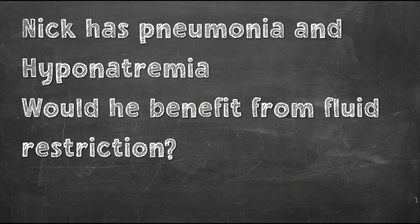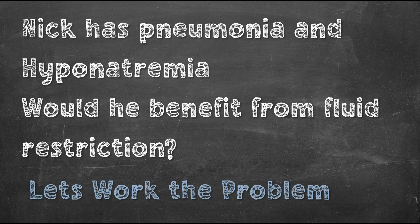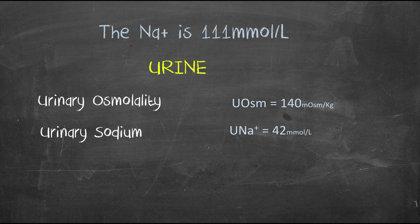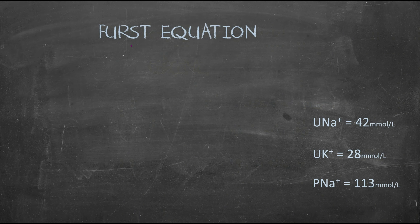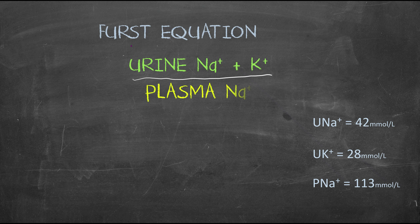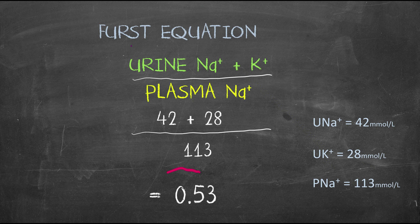Would Nick benefit from fluid restriction? Let's work the problem. His sodium is 111, urinary osmolality 140, urinary sodium 42, and urinary potassium 28. Using the Furst equation — urinary sodium plus potassium divided by plasma sodium: 42 plus 28 divided by 113 — the result is 0.53. So according to Furst, Nick should be fluid restricted to fewer than 500 mls of fluid per day.